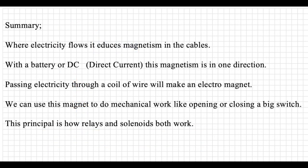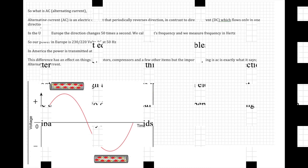So once again, let's summarize what we've learned in the last section. Where electricity flows, it induces magnetism into cables. With a battery or DC, direct current, this magnetism is in one direction. Passing electricity through a coil of wire will make an electromagnet. We can use this magnet to do work, mechanical work, like opening or closing a big switch. It's this principle which is how relays and solenoids both work. We've simplified it, but yeah, that's how they work. Pretty simple really, eh.